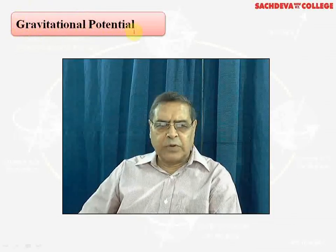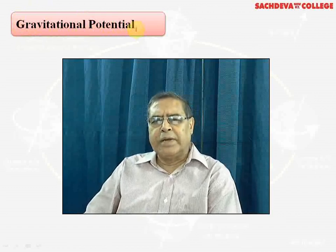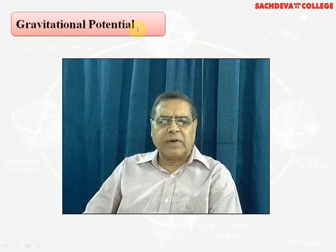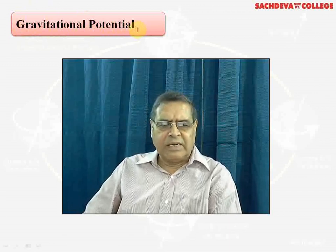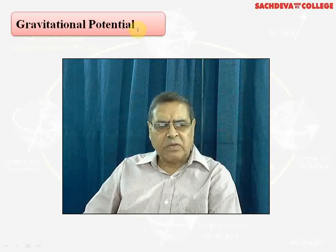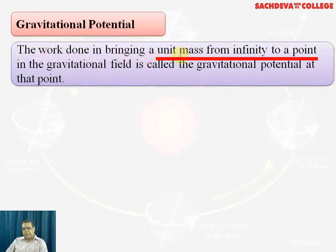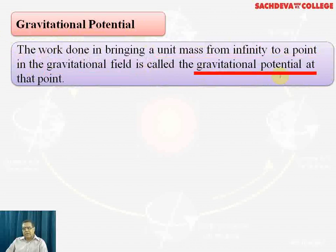Gravitational potential is defined as the work done to bring a unit mass from infinity to a point in the field of a given mass. Its unit is joule per kilogram, as it is work done per unit mass. When we use the term infinity, it means a point outside the field of the given mass.